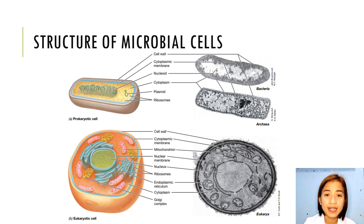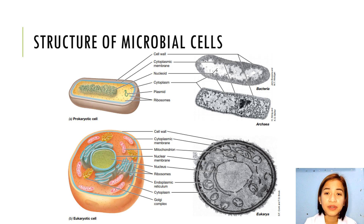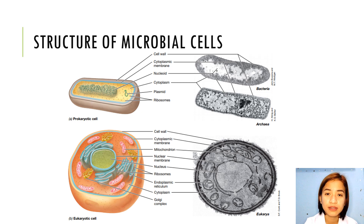Eukaryotic cells typically have much larger and much less compact genomes than prokaryotic cells. A human cell, for example, contains approximately 3 billion base pairs, which encode about 20,000 to 25,000 genes.